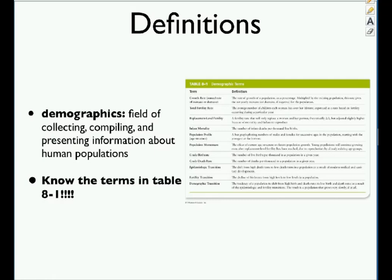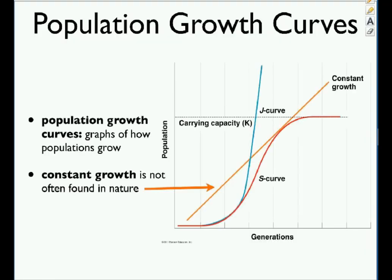There are quite a few vocabulary terms for this unit: growth rate, total fertility rate, placement level fertility, infant mortality, population profile, population momentum, crude birth rate, crude death rate, epidemiologic transition, fertility transition, and demographic transition. Make sure you know all these terms. First we'll talk about natural populations, then we'll talk about humans.